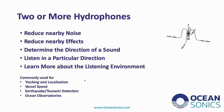If you have two or more hydrophones, you can do lots of really useful things. You can reduce nearby noise — by combining those hydrophones, you can reduce local noise and hopefully improve the signal-to-noise performance. You can reduce nearby effects, such as a reflective surface. You can also determine the direction of the sound, and you can listen in a particular direction. Imagine you have a flashlight at night — you point it where you want to look and it illuminates that area. We can do something similar with the right kind of hydrophone array. We can also learn more about the listening environment by using hydrophone arrays.